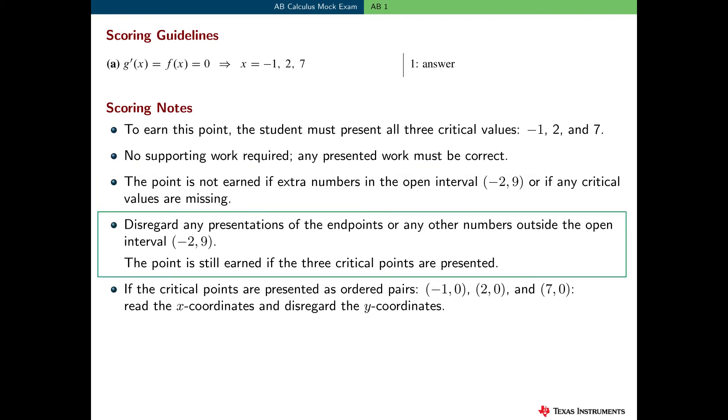However, we won't look at the endpoints or any numbers outside the open interval. So, for example, a student could present minus 1, 2, 7, and 12 and still earn all three points. Some students present critical points as ordered pairs. So, if we see ordered pairs here, we will read only the x-coordinates.